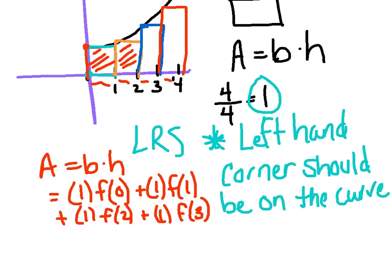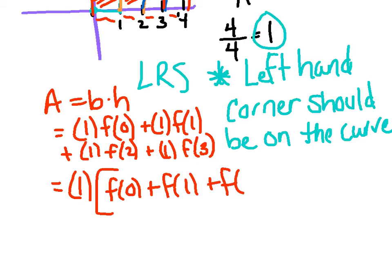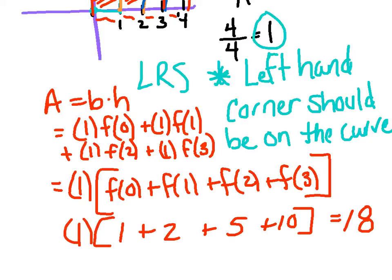Now all I have to do is evaluate each of those functions. I'll pull out a common GCF — they all have that base of 1, so I pull that 1 out in front. Then I evaluate f of 0, f of 1, f of 2, and f of 3 by plugging these numbers back into f. So 0 squared plus 1, et cetera. My calculations give me 1, 2, 5, 10 — add those up, that's 18 times 1. So I have an under-approximation of 18.